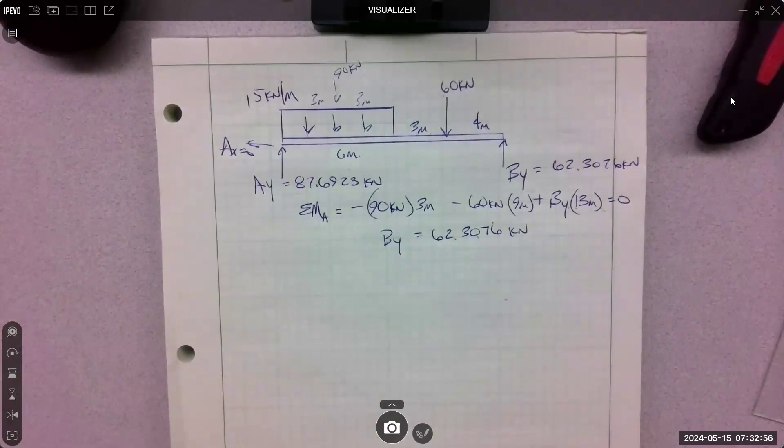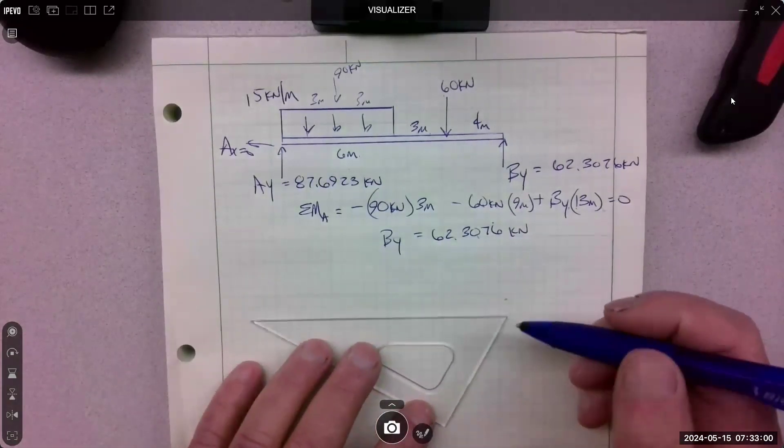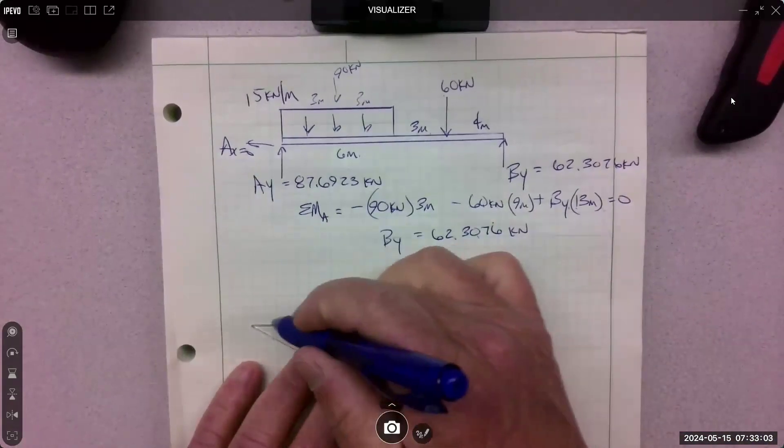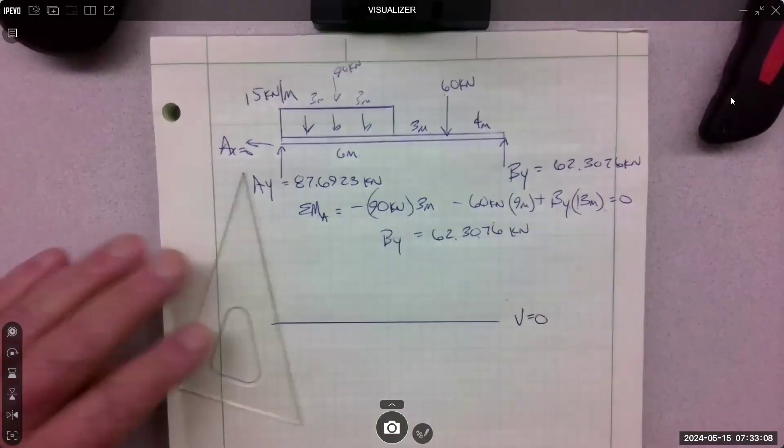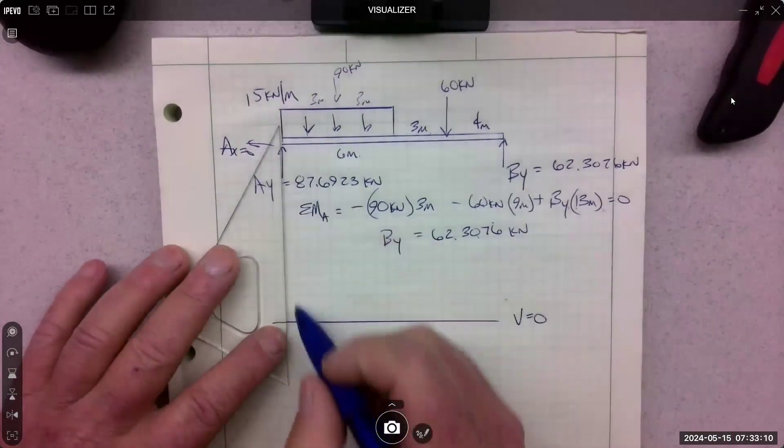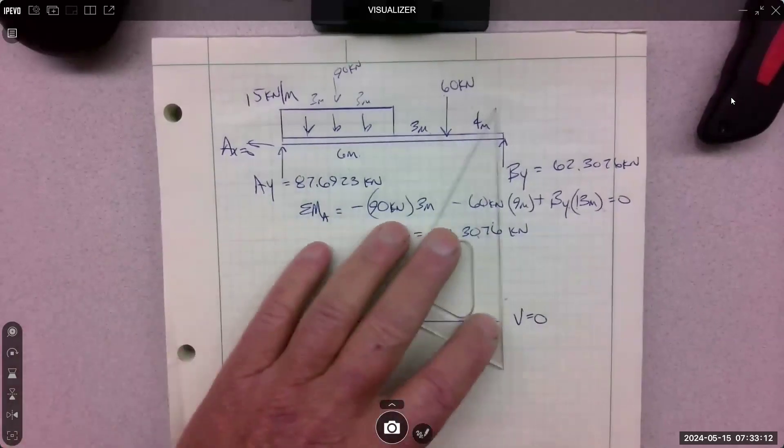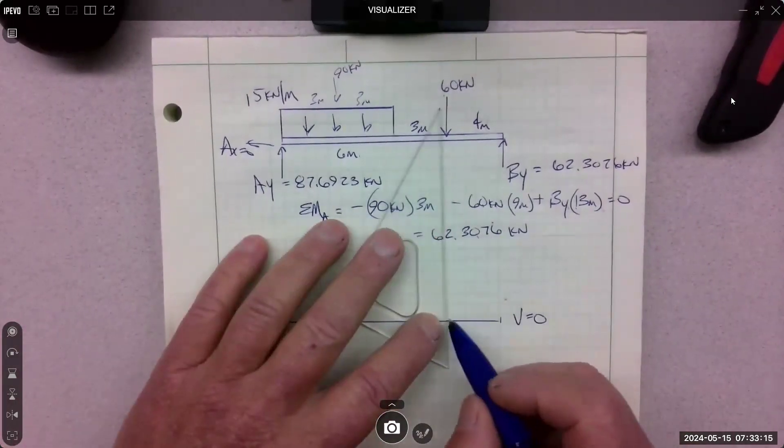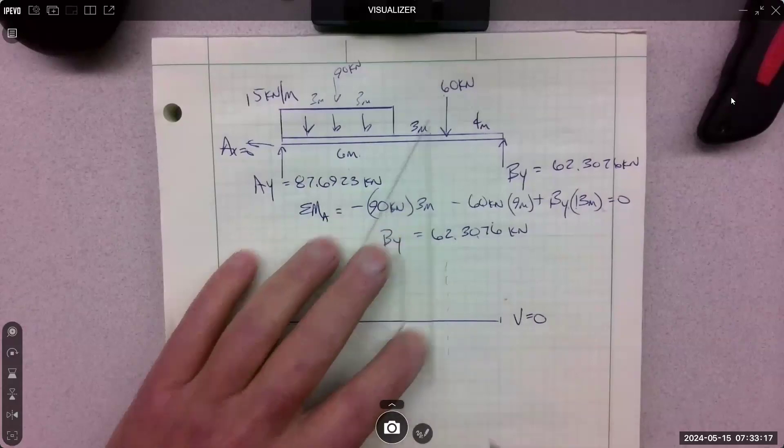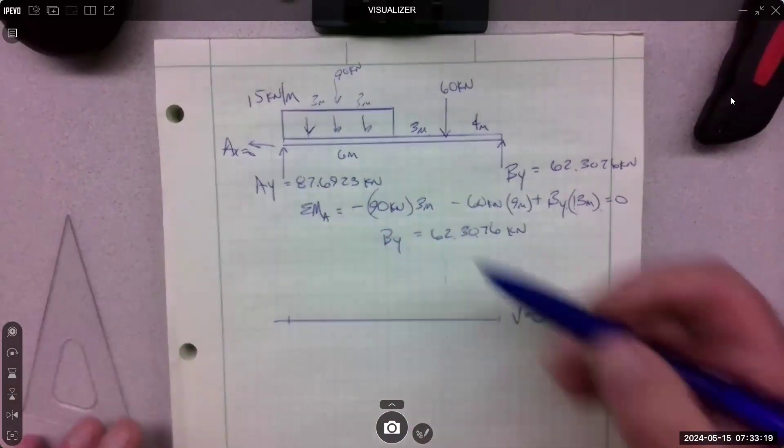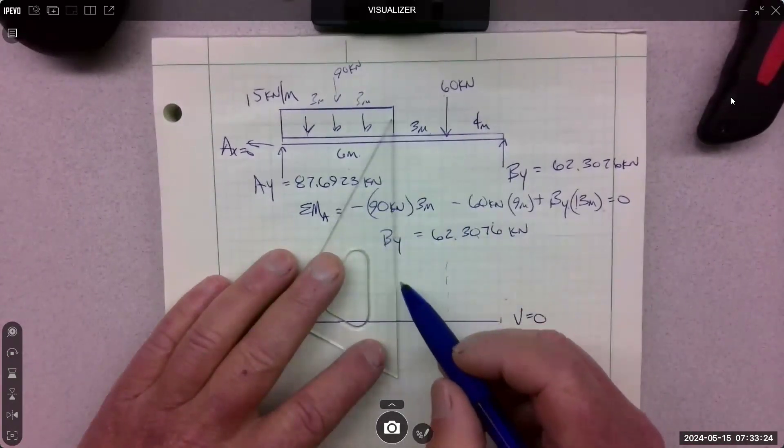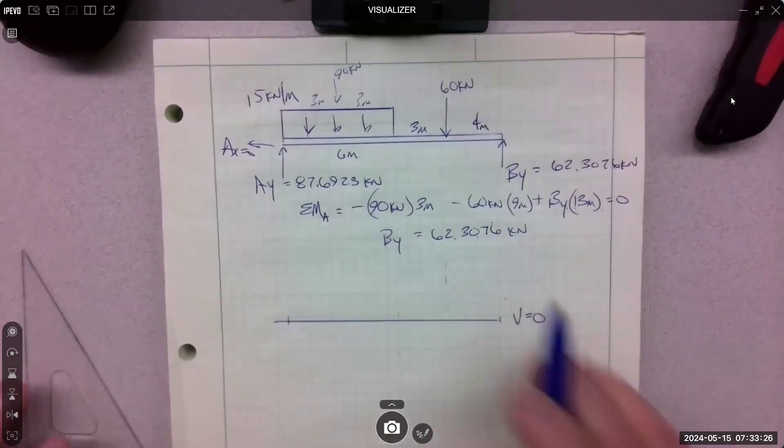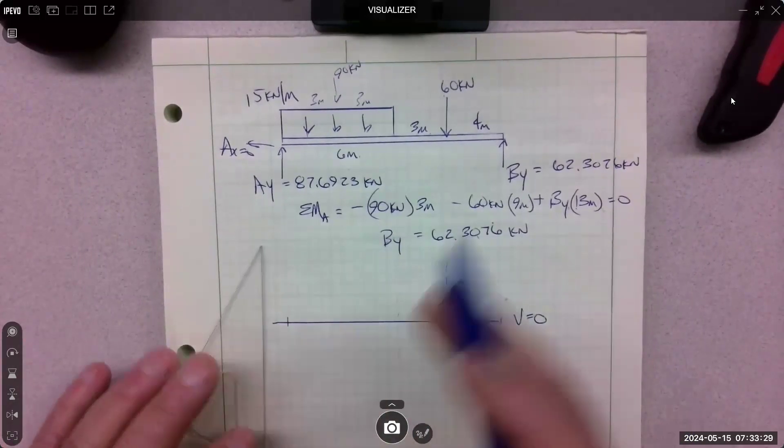All right. So the statics part is done. Then our goal typically is to find the maximum shear. So we draw the graph. V equals 0. Bring down the important points. So here's the end of the beam. Here's the end of the beam. There'll be something going on here. The end of the distribution is here. These are important spots in the shear. And then we just follow the forces.